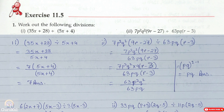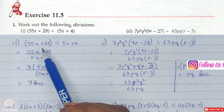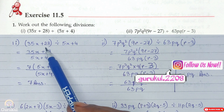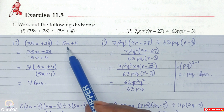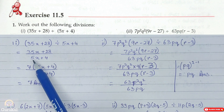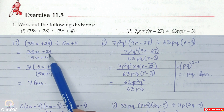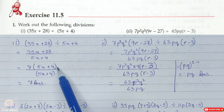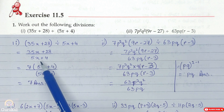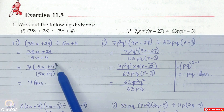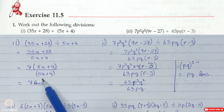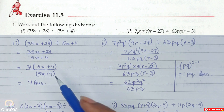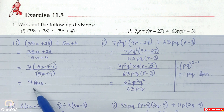Question number 1, part one. We need to work out the following divisions. As you can see on the screen, within the bracket is written 35x plus 28, divided by 5x plus 4. So we write it as (35x + 28) / (5x + 4). From the numerator, we take out the common factor 7, giving us 7(5x + 4) divided by (5x + 4). The like terms got cancelled, and the answer is only 7.